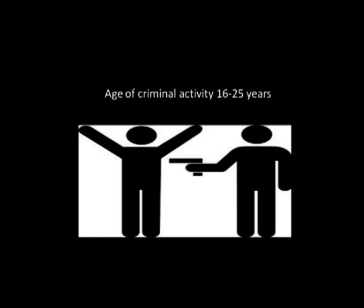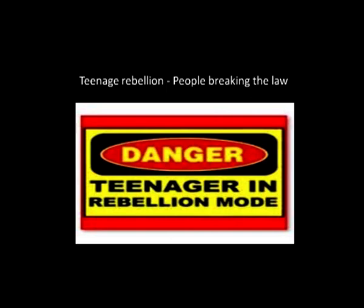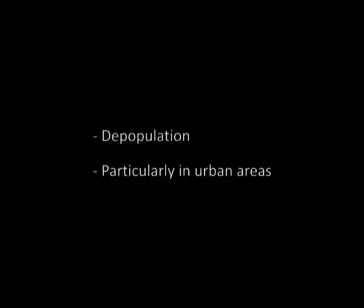The peak age of criminal activity between 16 and 25 may be due to several factors: boys often have to prove their masculinity, which can result in criminal activity; the likelihood of a young person belonging to a subculture is high, and some subcultures engage in criminal behaviors; and teenage rebellion can lead to people breaking the law. There are several negative impacts of crime upon an area, including depopulation particularly in urban areas, damage to community spirit, less neighborliness, and contribution to environmental poverty.